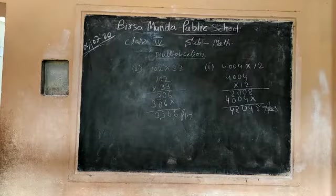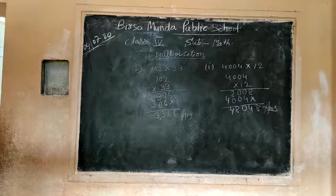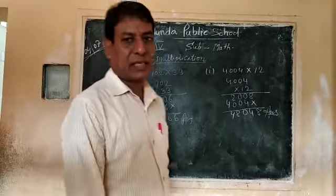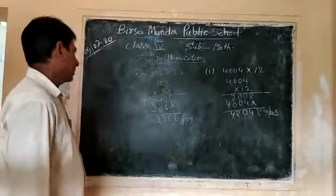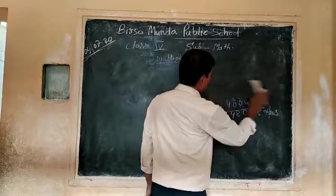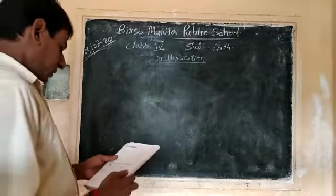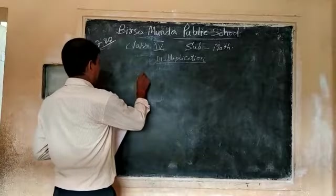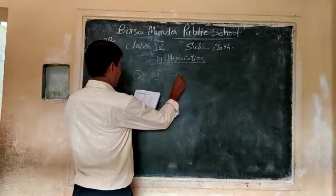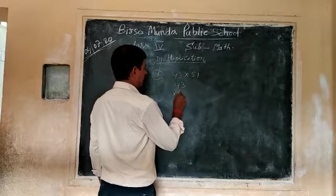We have to call the table and solve the table. The table is very good and easy. Now we will see. 43 x 50. Okay, here we are: 43 x 50.